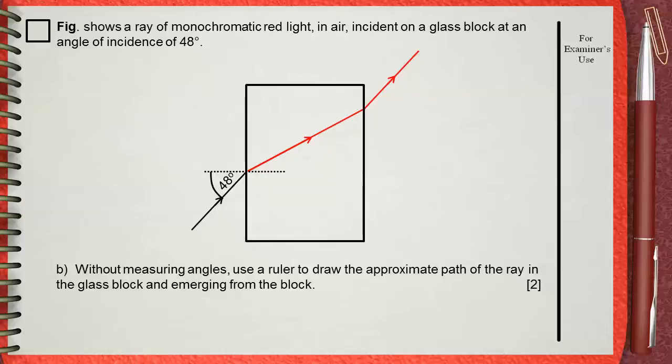As this case involves refraction in a rectangular block, the emergent ray going out of the block must look parallel to the original ray coming into the glass block. This is an important thing to take care of.